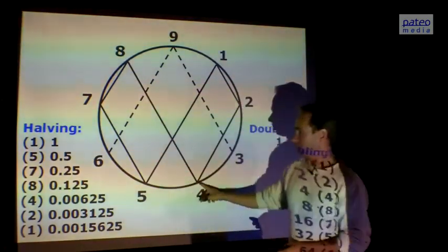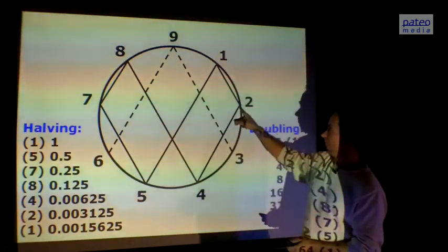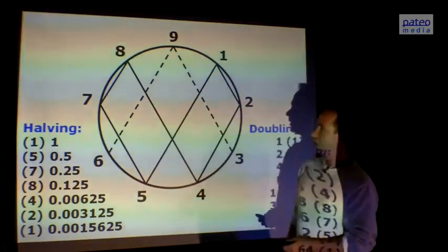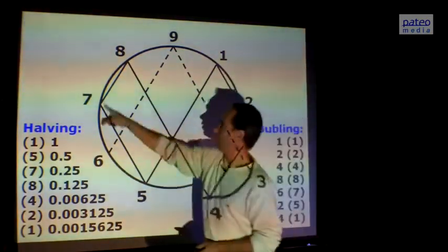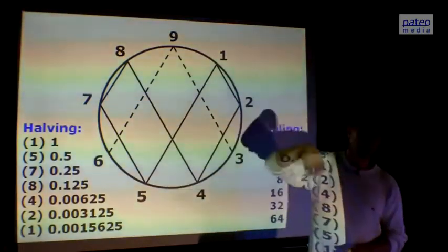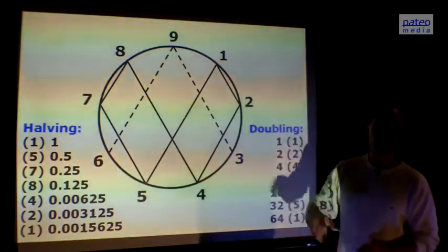Then we get 0.0625, and then we get here, and then we get here. That's the other order, the other sequence going the other way around. Also infinite, but the other way around.